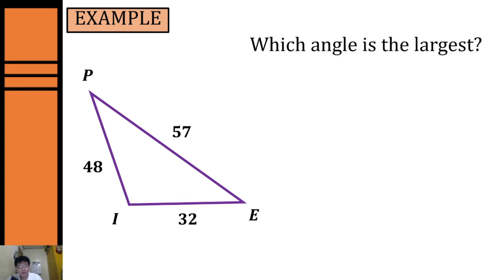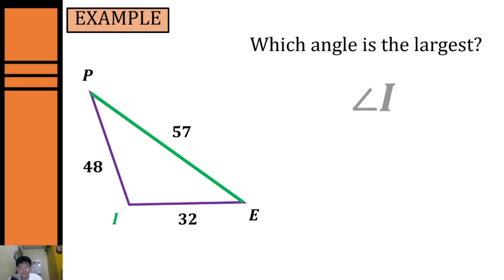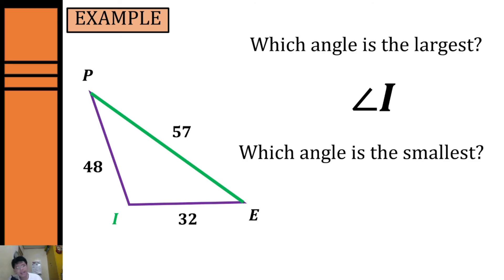Let's have another example. We're given a triangle with the dimension of each side, and we're going to find the largest angle. To identify the largest angle we have to determine the longest side. The longest side is side PE with 57. Using the Side Angle Inequality Theorem, the angle opposite the longest side is the largest angle, so our largest angle will be angle I.